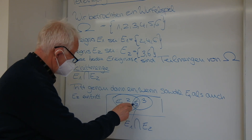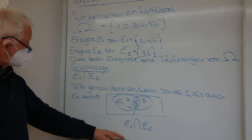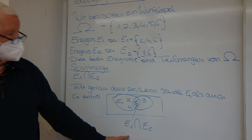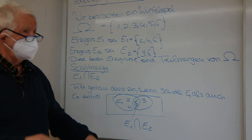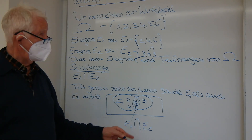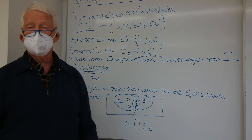Es überlappt sich. Und wir schreiben das dann E1 geschnitten mit E2 – das umgekehrte U.